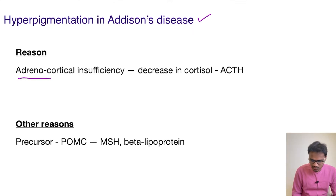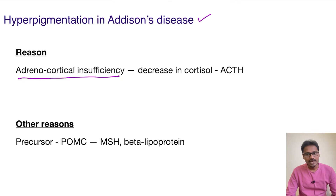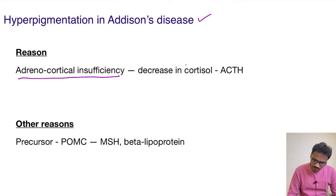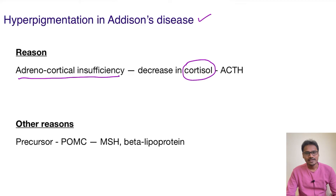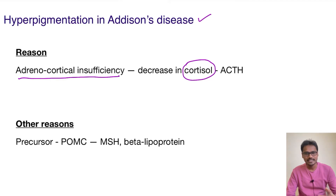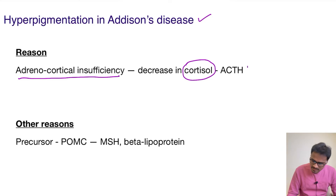First, what is Addison's disease? Addison's disease is adrenocortical insufficiency — both adrenal mineralocorticoids and glucocorticoids are reduced. The most important component, cortisol, is also reduced. Whenever cortisol levels are reduced, there is no negative feedback inhibition on ACTH, that is adrenocorticotropic hormone.